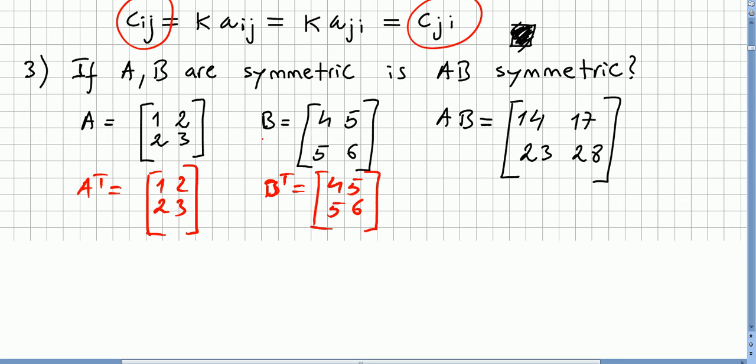But if you take the product of AB, so that will be 14, 17, 23, 28, and I think I don't have to do these calculations. You can see easily that AB is not equal to its transpose.